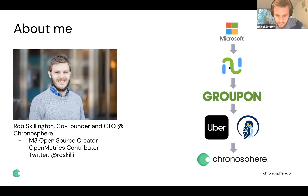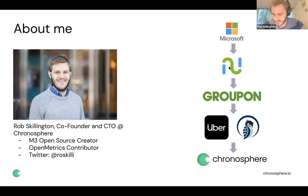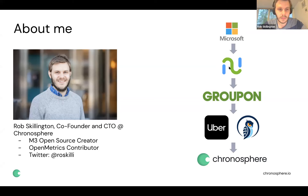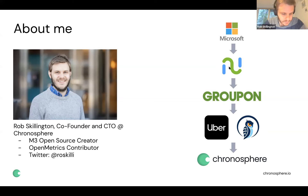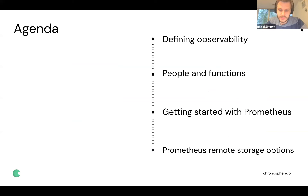Rob spent five years at Uber scaling the telemetry, monitoring, and metrics systems. M3 was born there, as was Jaeger — the open-source CNCF tracing project. He also references a recent blog post about Uber's logging team migrating from Elasticsearch to a ClickHouse backend with a schema-free agnostic query engine. Rob also contributes to OpenMetrics, the modernized Prometheus exposition format now part of CNCF.